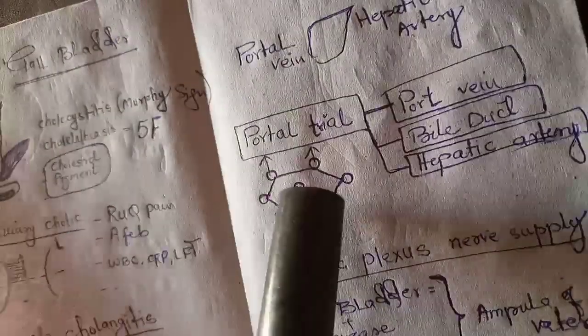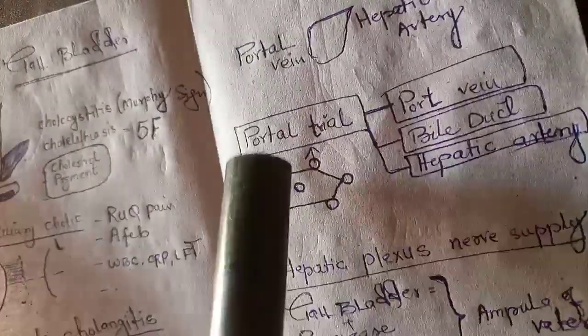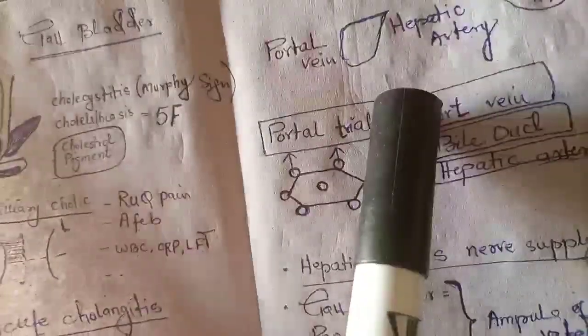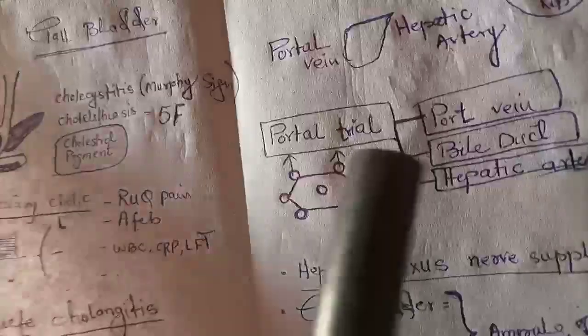Liver has basic unit of hepatic sinusoid which is hexagonal in shape, and on its edges there are portal triad.